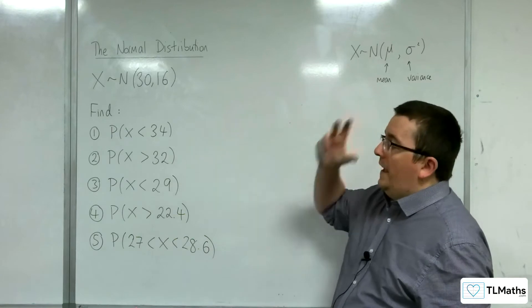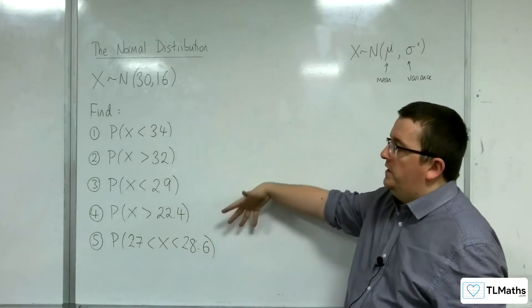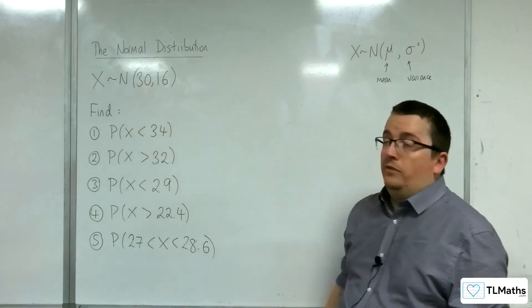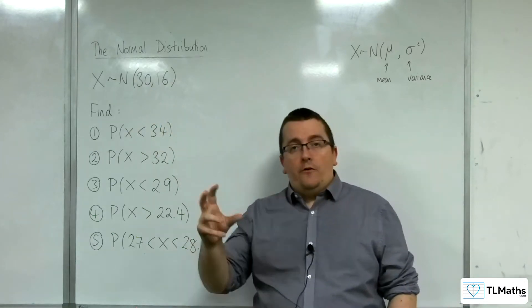So in this video we're going to use the calculator to find these probabilities. We've been given that X is normally distributed with a mean of 30 and a variance of 16.